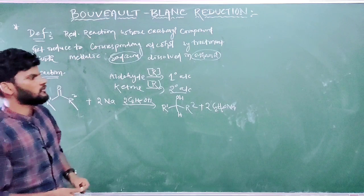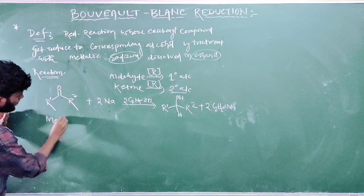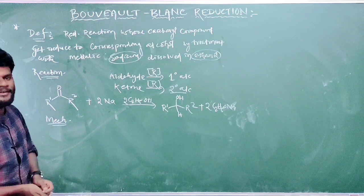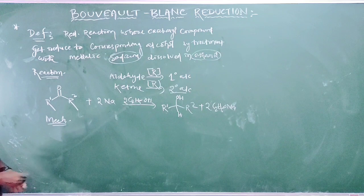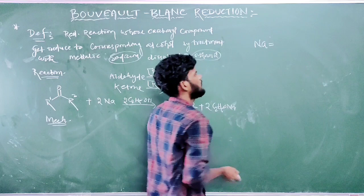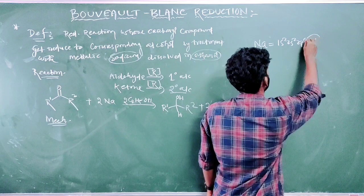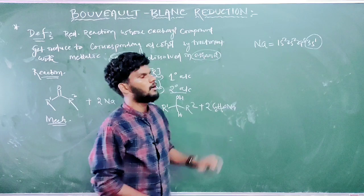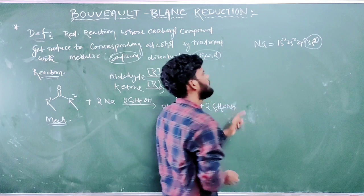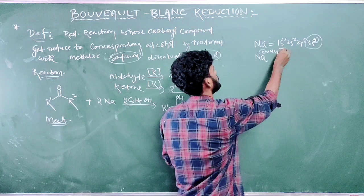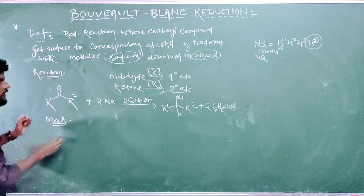And as always, reaction without mechanism is not chemistry. So what is the mechanism? This is the carbonyl compound, and the carbonyl carbon is electrophilic in nature. So the nucleophile here is the sodium metal. The sodium metal's outer orbital electron configuration is 1s² 2s² 2p⁶ 3s¹ — it has a single electron in its outer orbital. That one electron behaves as a nucleophile, and sodium with one electron over it is nucleophilic in nature.